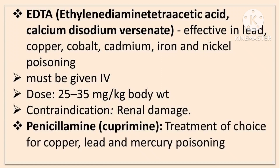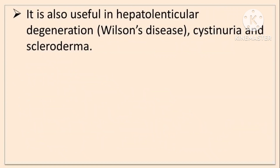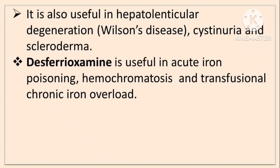Penicillamine is the treatment of choice for copper, lead and mercury poisoning. It is also called Cuprimine. It is also useful in hepatolenticular degeneration (Wilson's disease), cystinuria and scleroderma. Desferrioxamine is the chelating agent of choice in acute iron poisoning, hemochromatosis where iron is retained in the body, and transfusional chronic iron overload.